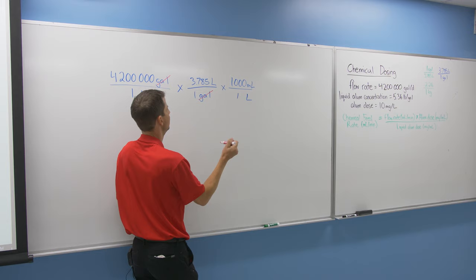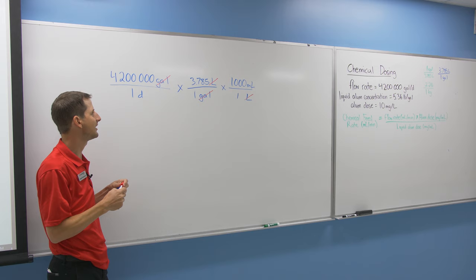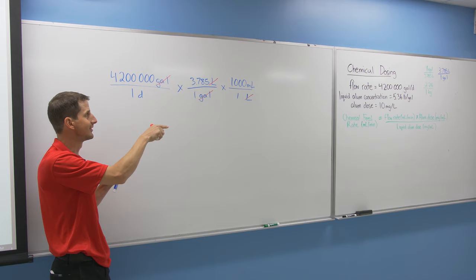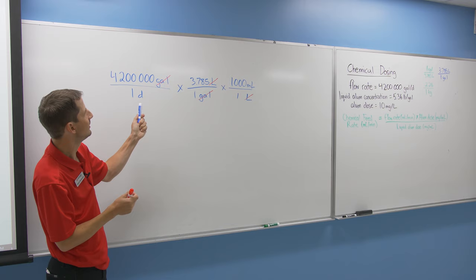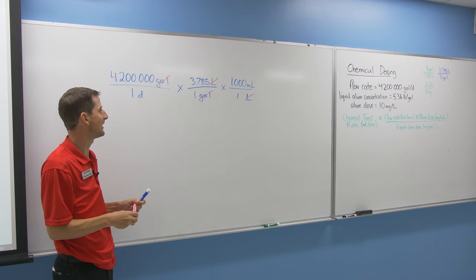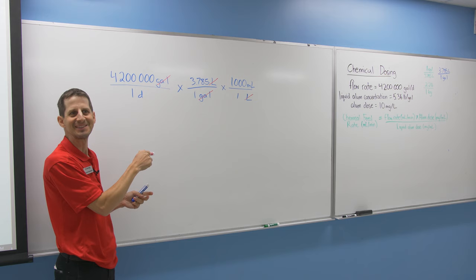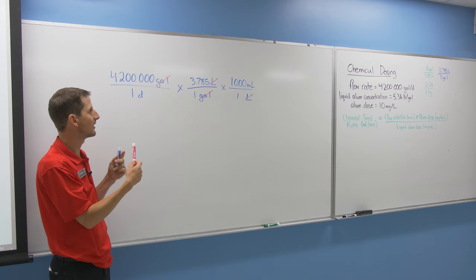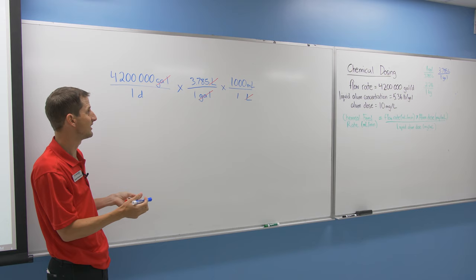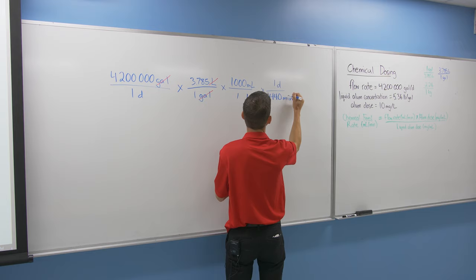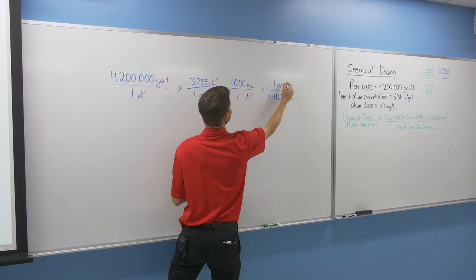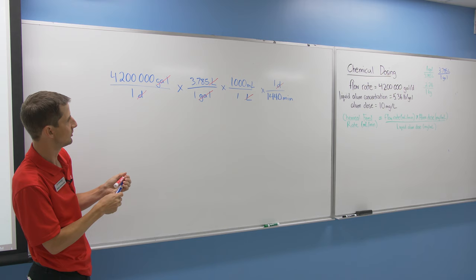Now we need to get from days into minutes. Most people don't know how many minutes in a day off the top of their head, but there are 60 minutes in an hour and 24 hours in a day. That's 1440 minutes in a day. Days are on the bottom, so we need a day on top: one day equals 1440 minutes. That cancels our days, and once we compute this, our units will be in milliliters per minute.